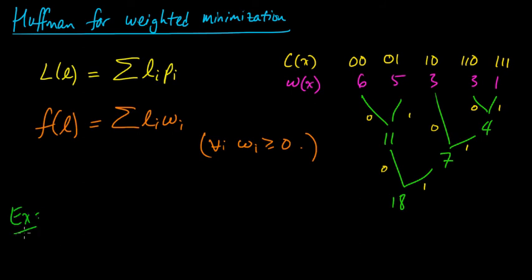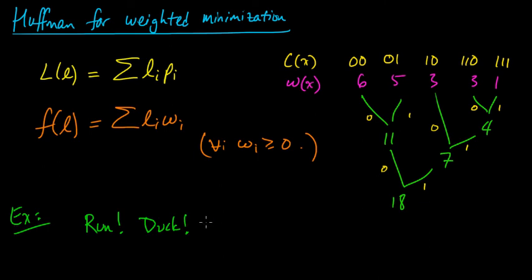Here's an example of a situation where this could be applicable. Suppose you're sending messages and some messages are more urgent — for example, in English, messages like 'run,' 'duck,' or 'help' are very urgent. For those urgent messages, there is a higher cost per code symbol, and so you want shorter codewords for those particular messages.